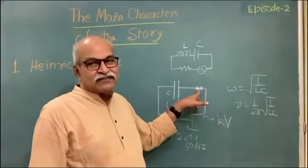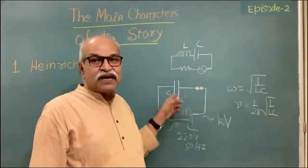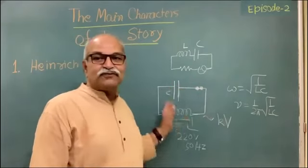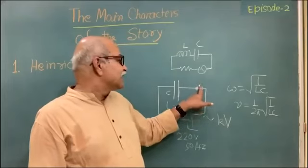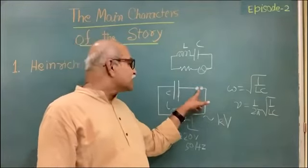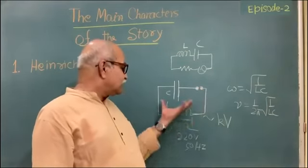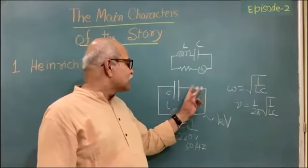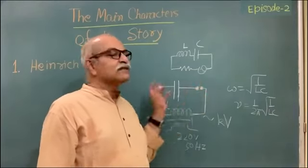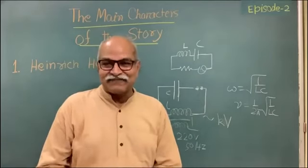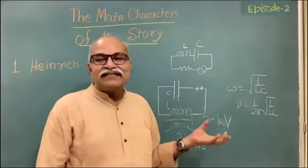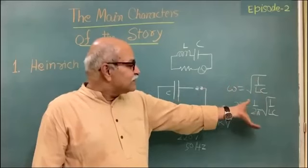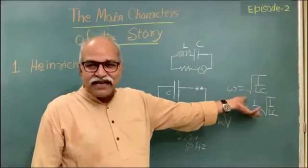But the spark will not be continuous. Once the spark is there and the connecting path is formed, the charge can no longer accumulate, so the voltage will decrease and the spark will stop. Once the spark stops, since we are supplying voltage, the charge will build up again, there will again be a large potential difference, and again there will be a spark. So intermittently, electromagnetic waves are generated from this circuit, at a mean frequency close to 1 over the square root of LC.